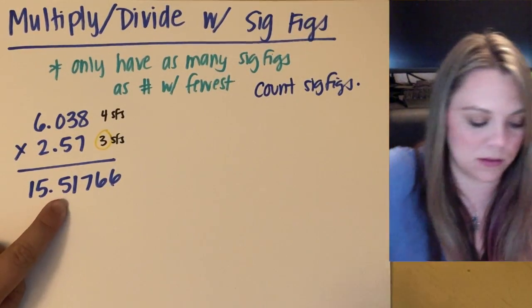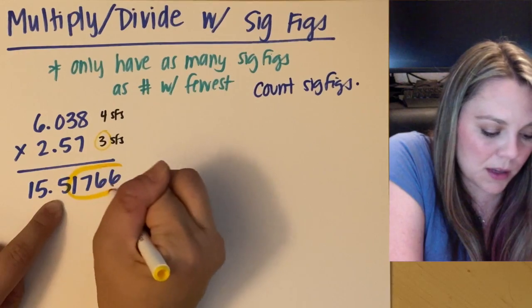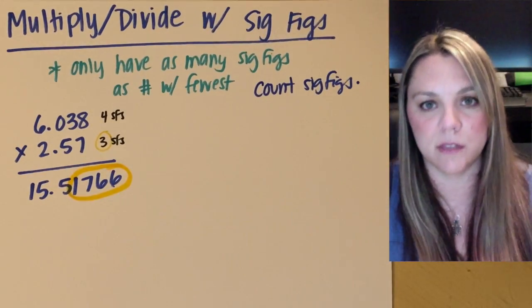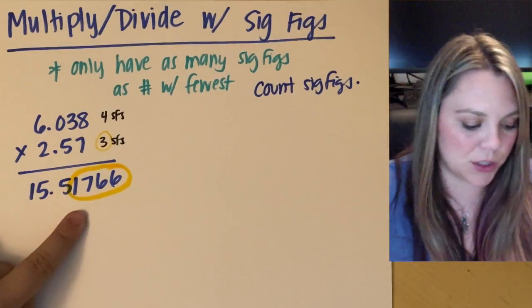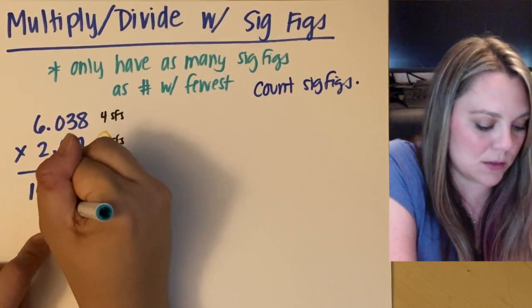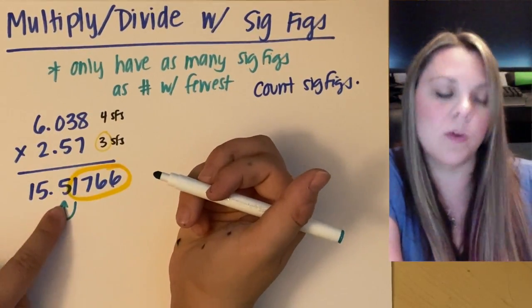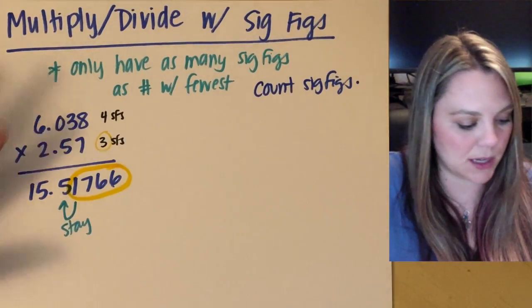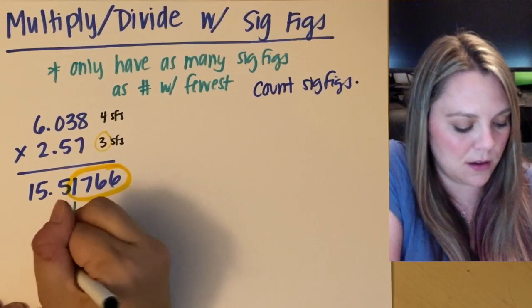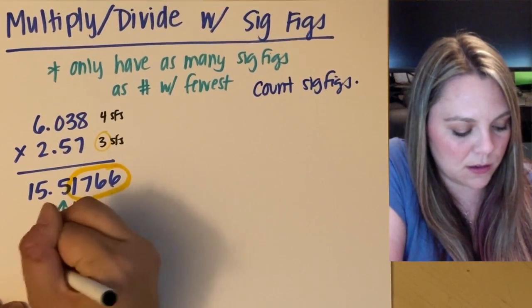One, two, three. Anything beyond my third sig fig is not significant. Okay, I can't have it. I do need to look and see if this is going to round up, but the one does not make the five round up. I'm going to stay, which means my answer here should be 15.5.